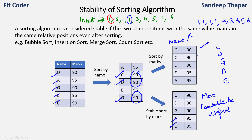Algorithms that maintain relative order when values are the same are known as stable sorting algorithms. Examples include bubble sort, insertion sort, merge sort, and count sort. Whether stability matters depends on the problem we are trying to solve; if it does matter, we choose one of these stable sorting algorithms.